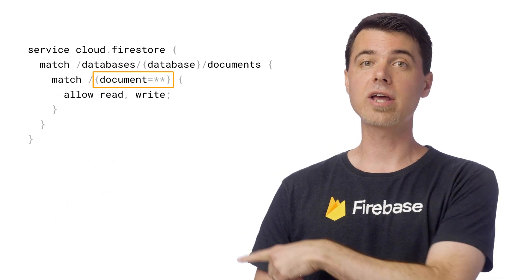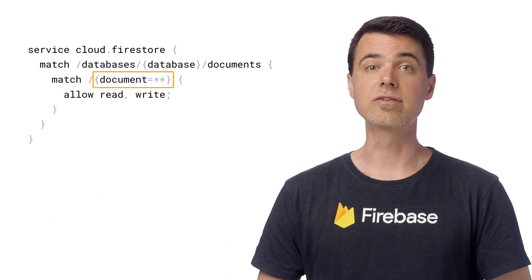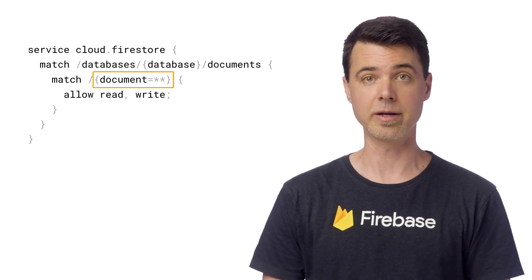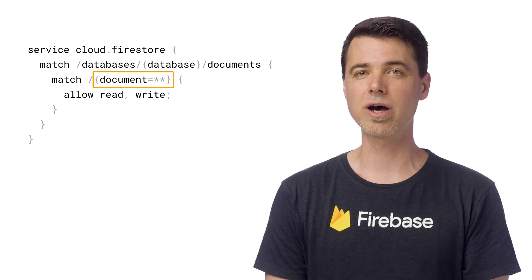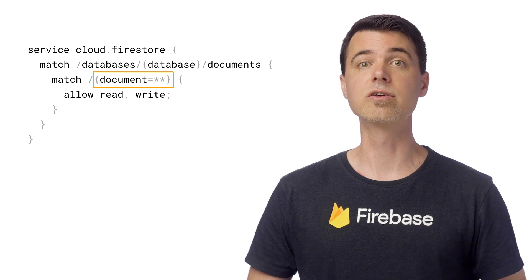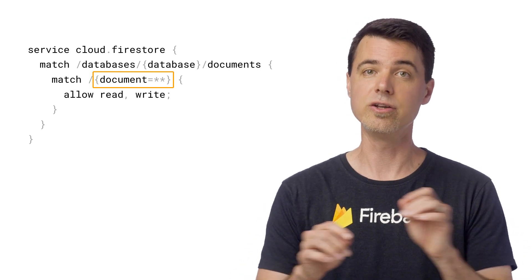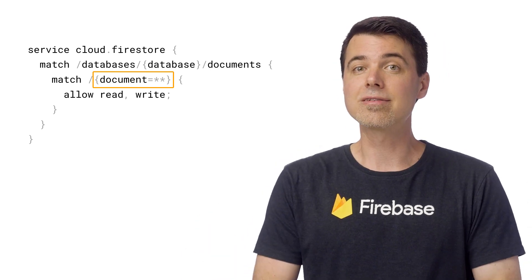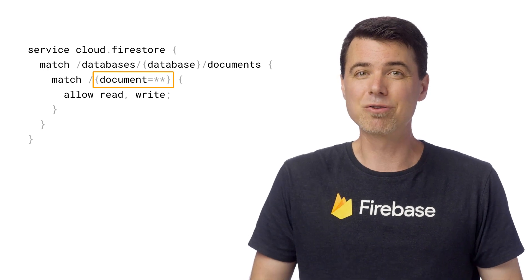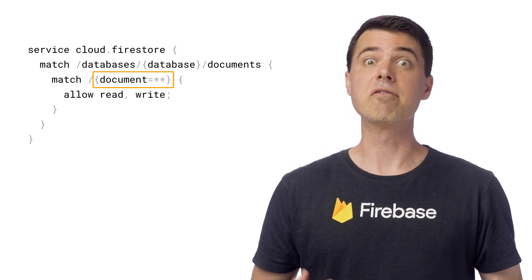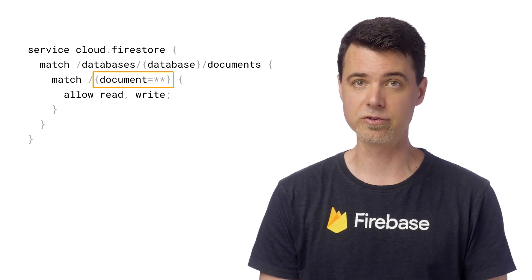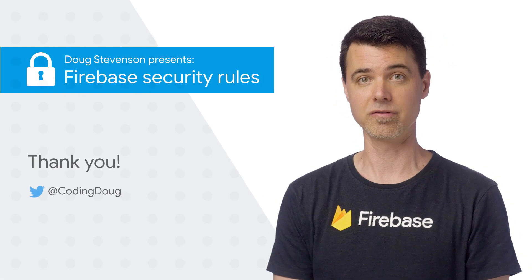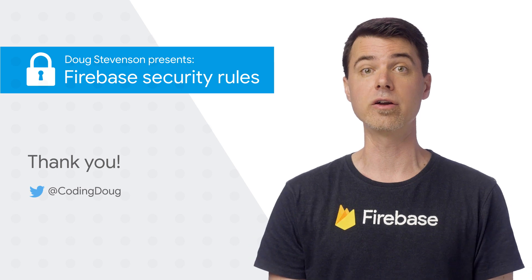Before we wrap up, take a look at this rule. It's the rule that your database probably started with when you created your project if you chose the initial test mode for your database. There's an equal star star in the document wildcard here. This is a special kind of wildcard, and this rule is actually matching every single document in your entire database and granting full read and write access to each of them. This rule is OK to get started playing around with Firestore in a new app. But if the rule sounds problematic, that's because it is — it's very problematic when it comes time to write effective rules. So when you start writing rules, first get rid of this one. I'll say more about why in the next episode of this series. So stay tuned right here to the Firebase channel on YouTube, and I'll see you then.